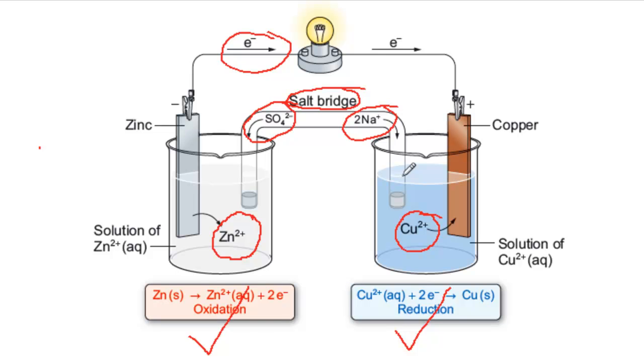The Daniel cell is very simple, but this basic setup, half cells with oxidation and reduction joined by a salt bridge, is common to most of the other electrochemical cells that you'll meet.